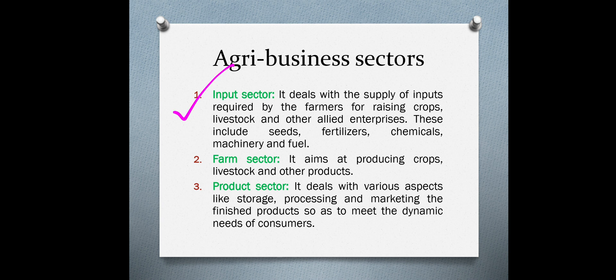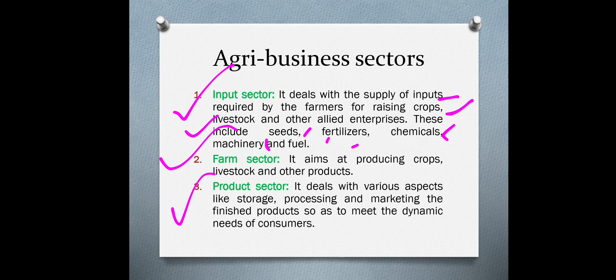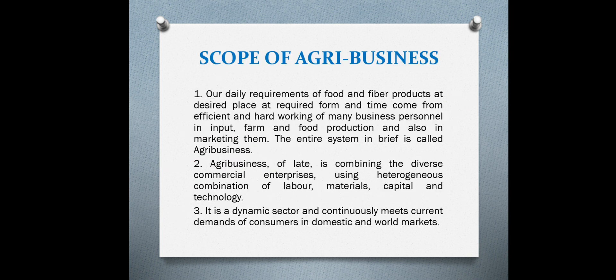The three sectors are: input sector, farm sector, and product sector. The input sector refers to the supply of inputs required for farming, raising crops, livestock, or allied enterprises — including seeds, fertilizers, chemicals, machinery, fuel, etc. The farm sector means actual production on the farm. The product sector deals with various aspects after harvesting — the product may be processed, stored, or distributed to the final consumer.